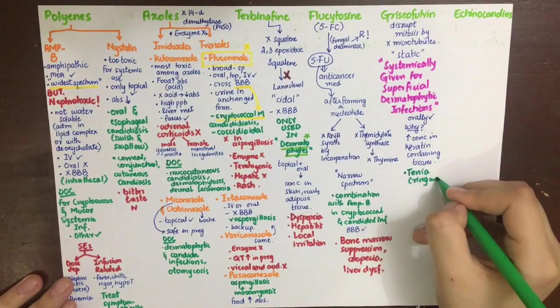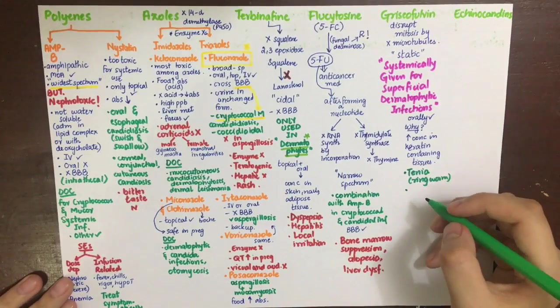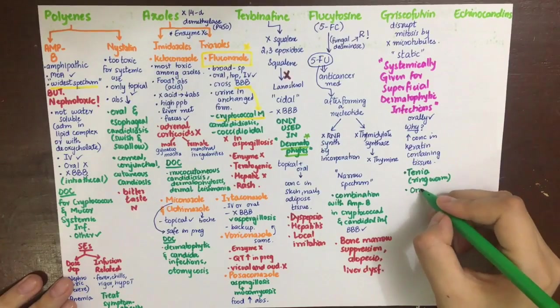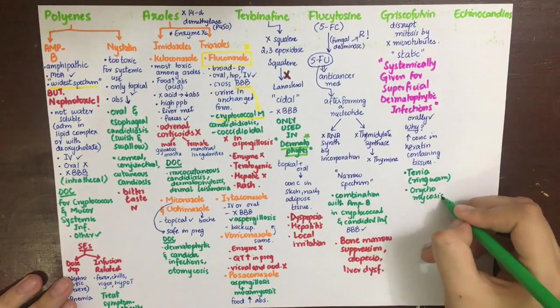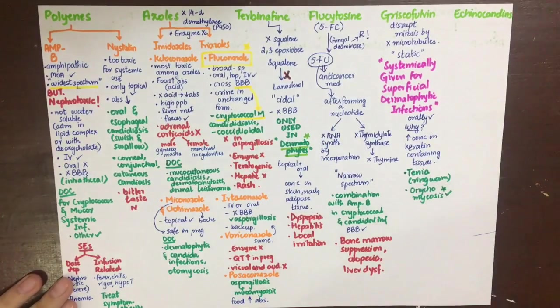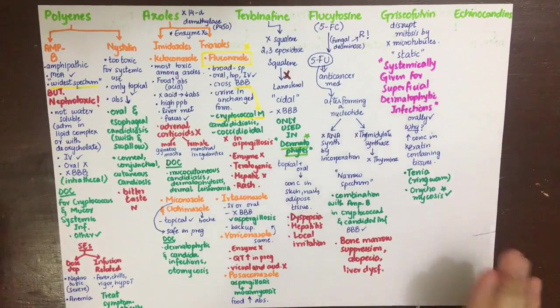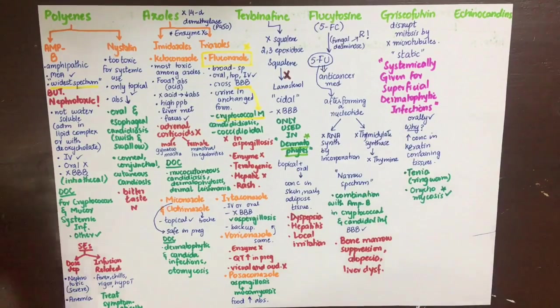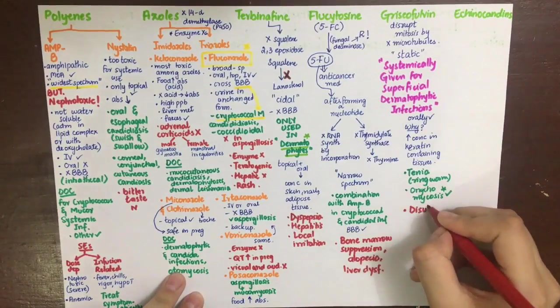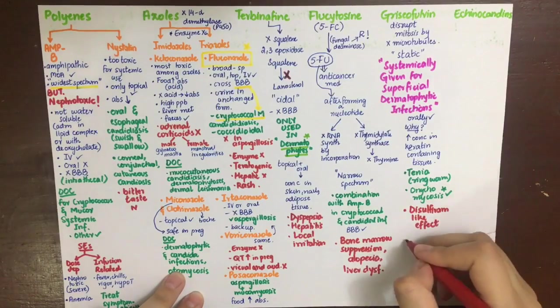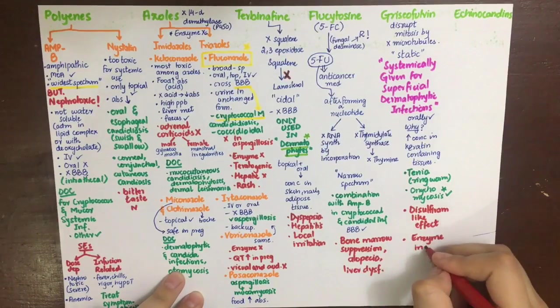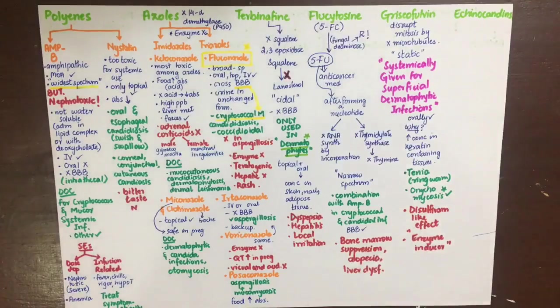An important thing to remember about griseofulvin is that it also has a disulfiram-like effect, making the patient intolerant to ethanol. It is also an enzyme inducer, not an enzyme inhibitor. By its enzyme-inducing activity, it will decrease the effect of warfarin and oral contraceptives.